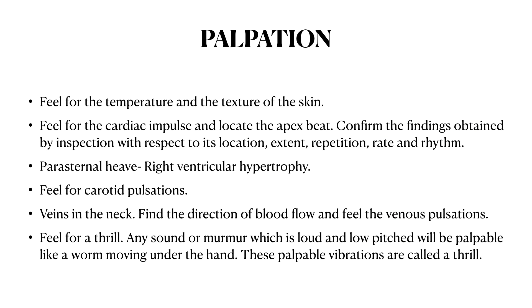Our next step is palpation, which means using the palm of your hand for examination. First, feel for the temperature and texture of the skin. After that, feel for the cardiac impulse and locate the apex beat. Confirm findings from inspection with respect to location, extent, rate, and rhythm. Then look for parasternal heave — if present, it indicates right ventricular hypertrophy. Feel for carotid pulsations and veins in the neck; find the direction of blood flow and feel venous pulsations. Then feel for a thrill — a loud, low-pitched murmur palpable like a worm moving under your hand.